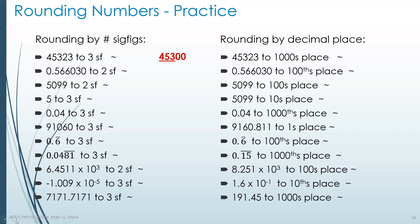0.566030 to two sig figs. Our first sig fig is the 5, and our second is the 6 immediately after that. We keep the 5, giving 0.5. Then the second 6 tells us to round the first 6 up to a 7. The rest of the positions are dropped because we only want two significant figures. So 0.57 satisfies both conditions — it's about the same as the original number, but it only has two significant figures.